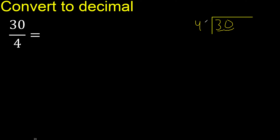Therefore, with 30 and 4, multiply by which number is nearest to 30 but not greater. 4 multiply by 8 is 32 — is greater. Multiply by 7 is 28, ok, is not greater. 30 minus 28 is 2, next.